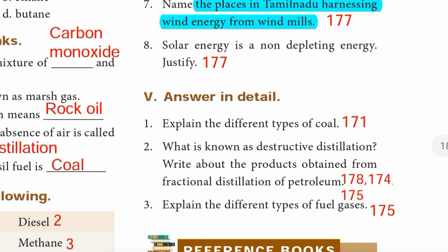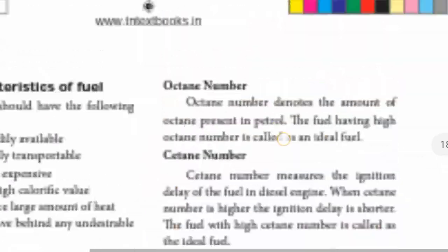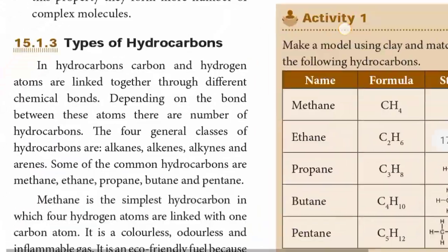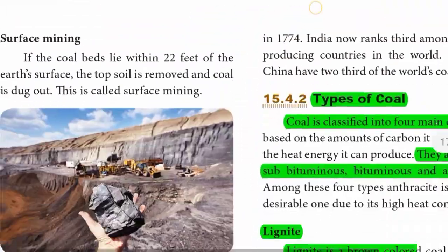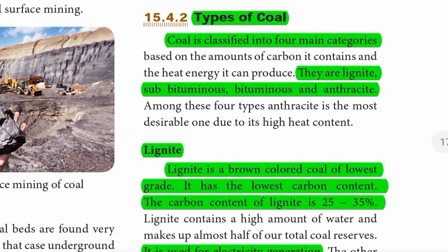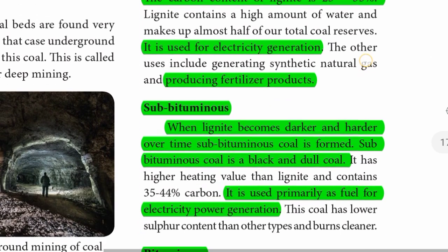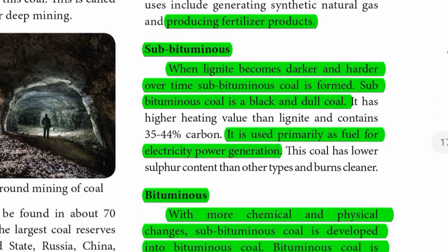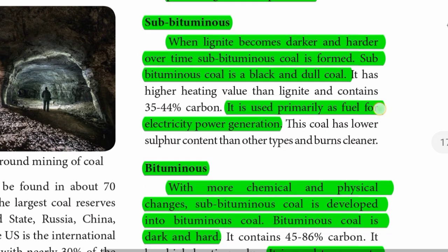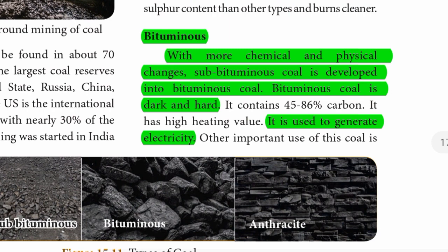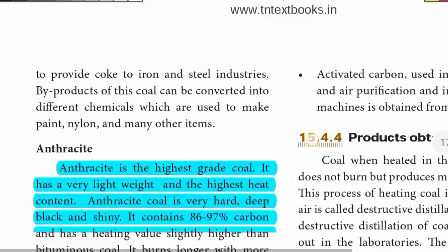Roman number five — Answer in detail. First one: Explain the different types of coal. Page 171. Coal is classified into four main categories: lignite, sub-bituminous, bituminous, and anthracite. Lignite is brown colored with 25–35% carbon content, used for electricity generation and producing fertilizer products. Sub-bituminous is dull coal used primarily as fuel for electricity generation. Bituminous is dark and hard, used to generate electricity. Anthracite is the highest grade.